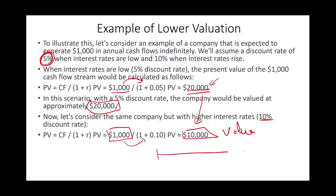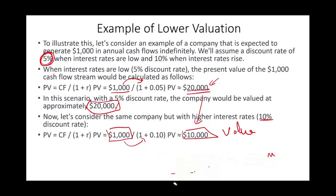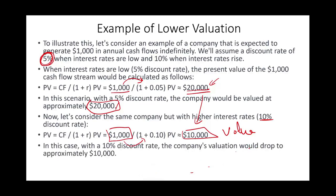A bond is composed of two things: you get your principal back plus a stream of coupon cash flows. To value bond investments, you take each cash flow divided by (1 + i) raised to the relevant period. As i goes up, the value of the bond goes down — this is why higher rates lead to lower valuation. The same logic applies to real estate: rental payments are discounted at a higher rate, resulting in a lower present value.